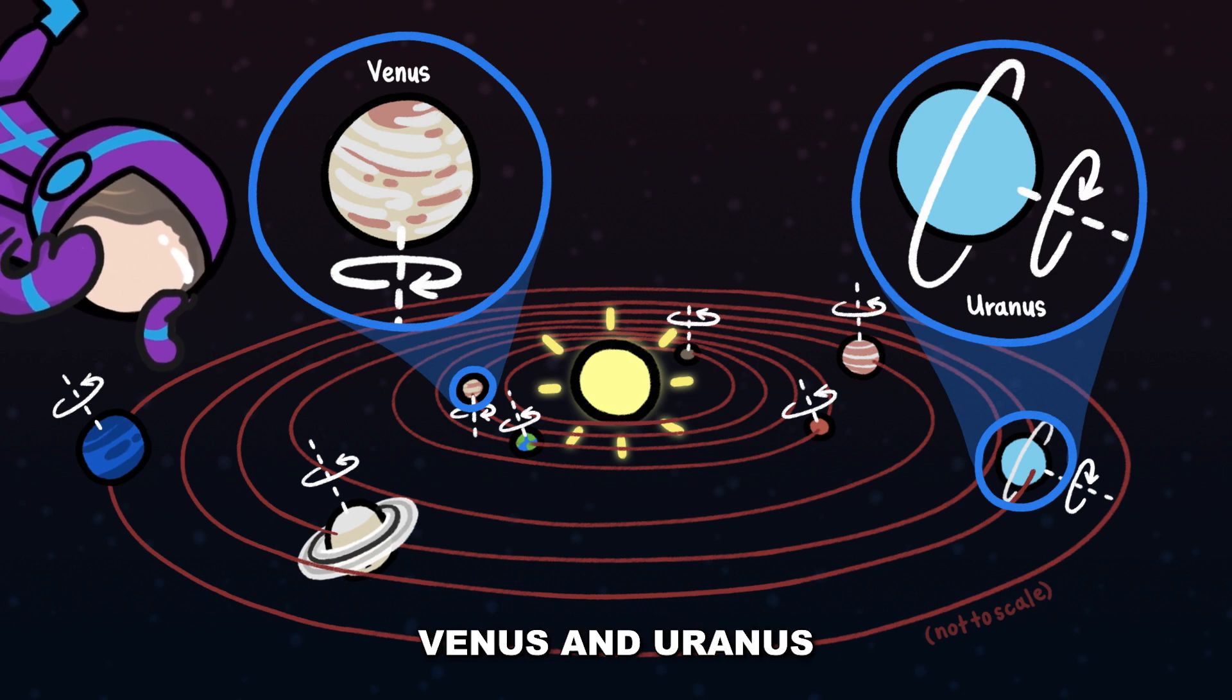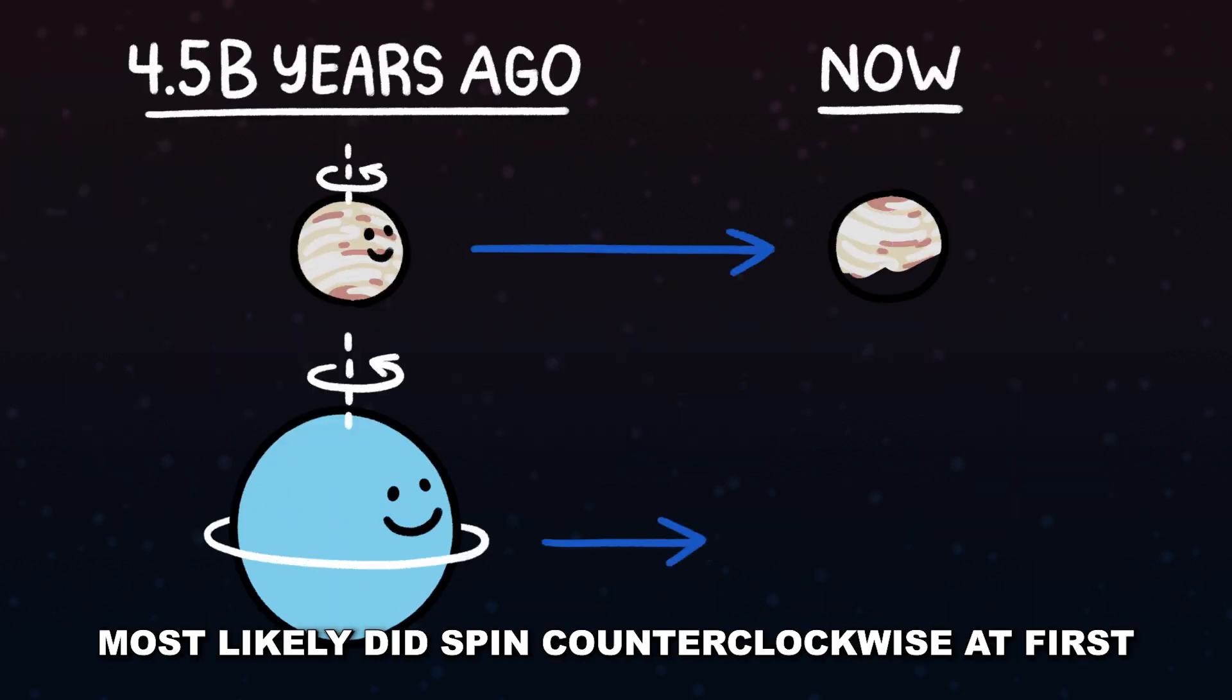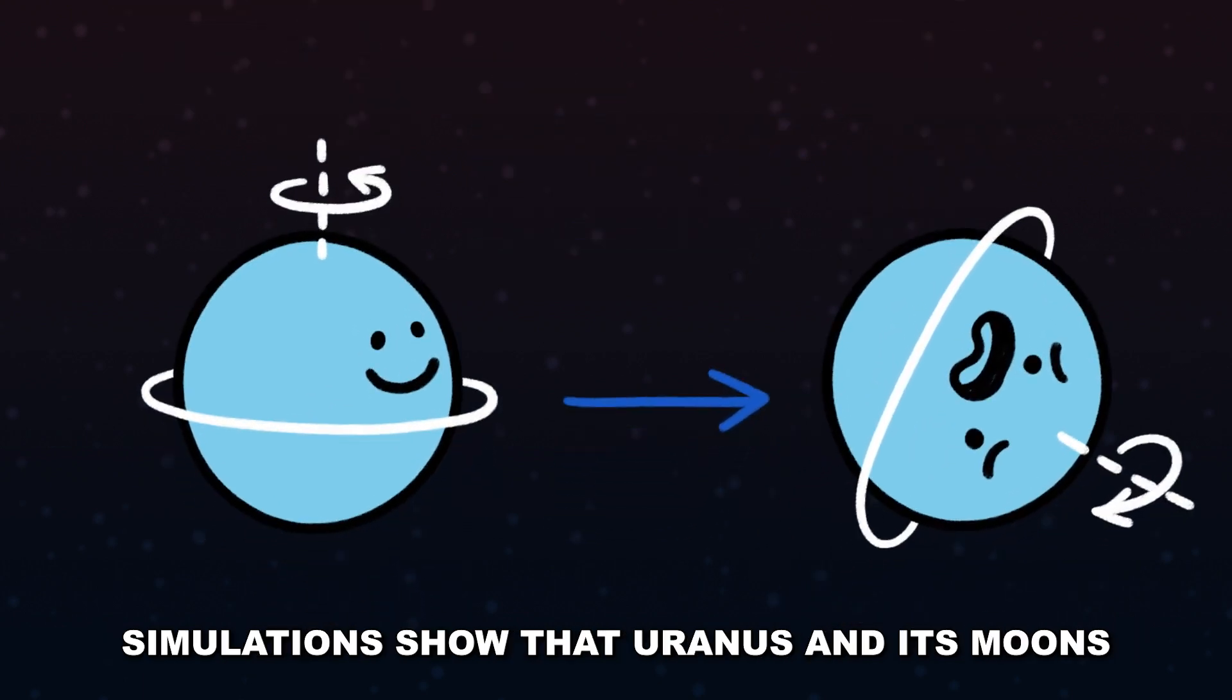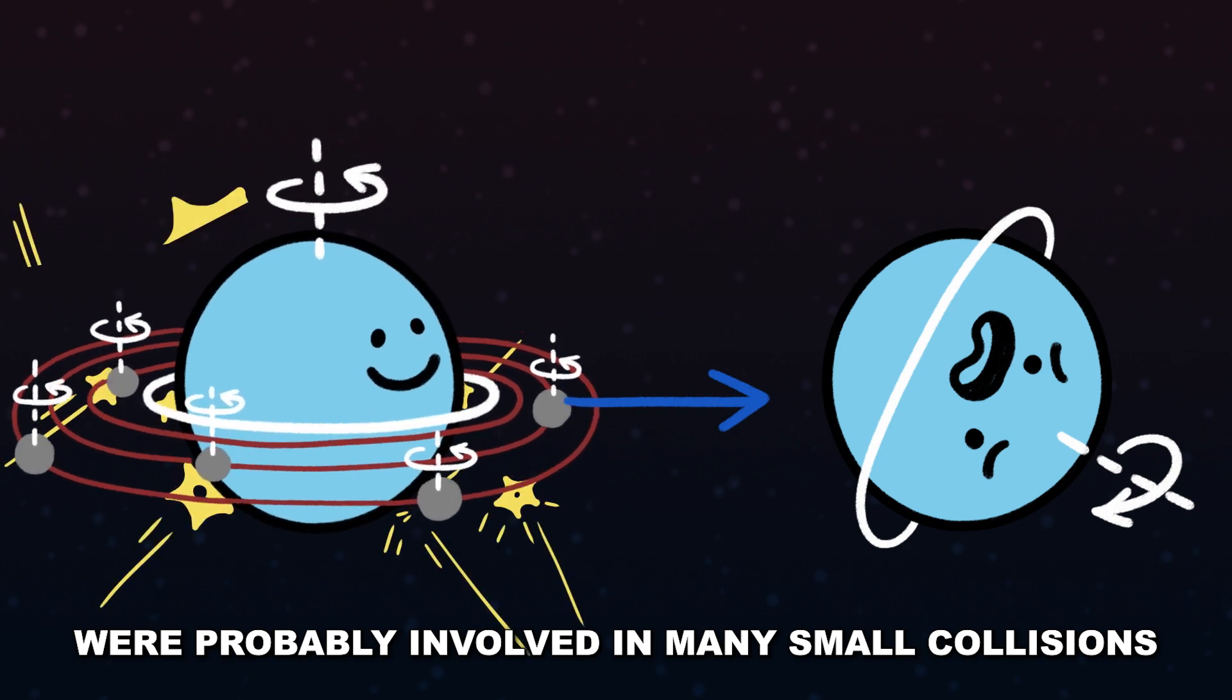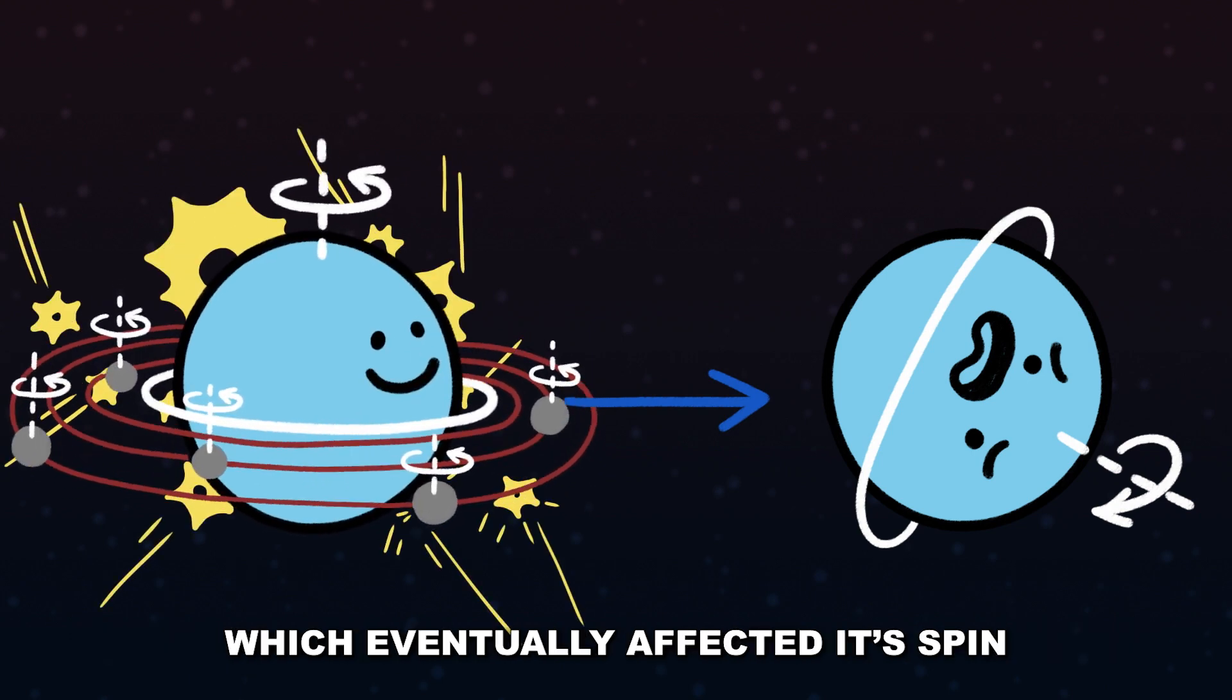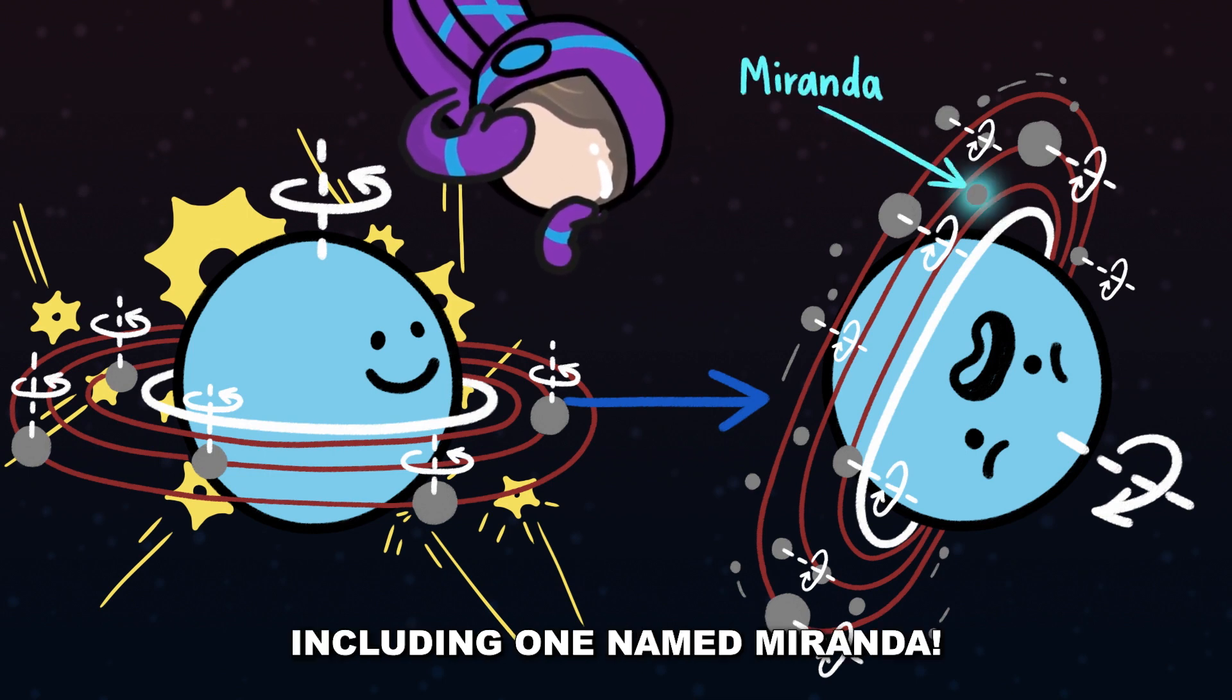Except for two: Venus and Uranus. Scientists say that Venus and Uranus most likely did spin counterclockwise at first. Simulations show that Uranus and its moons were probably involved in many small collisions which eventually affected its spin and its moon's spin, including one moon named Miranda.